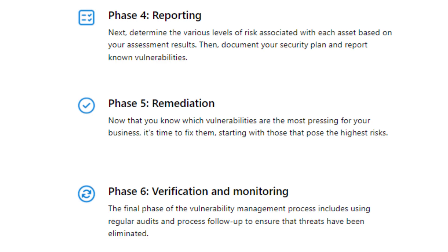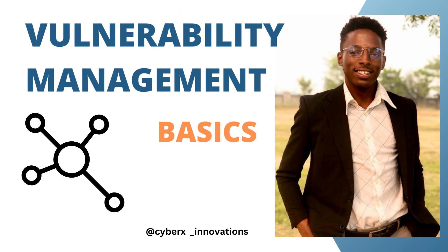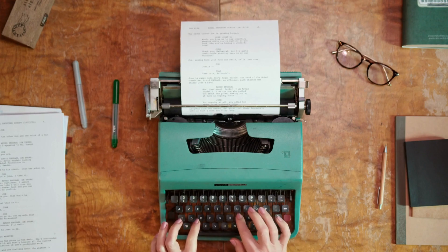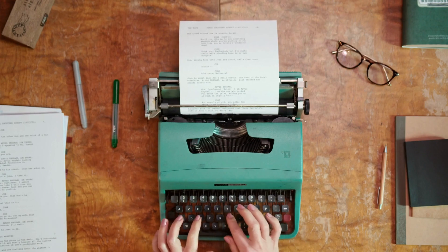Phase 6 — Verification and Monitoring: The final phase includes using regular audits and process follow-up to ensure that threats have been eliminated. It's important to note that vulnerabilities can be classified by their severity, impact, and likelihood of exploitation. Organizations should prioritize their vulnerability management efforts based on the criticality of the vulnerabilities and the potential harm they could cause, allowing them to allocate resources effectively and address the most pressing security concerns first.